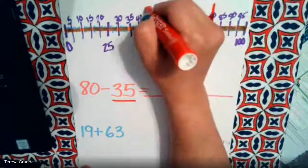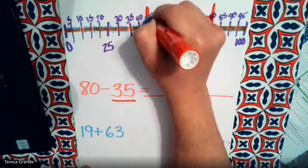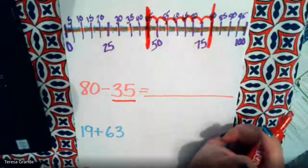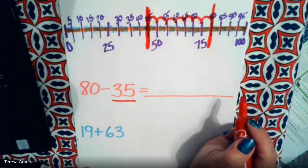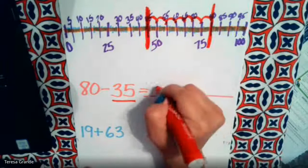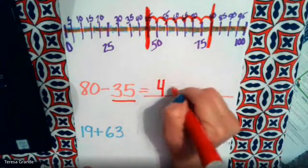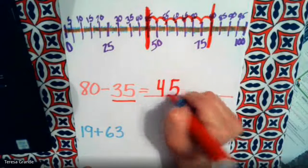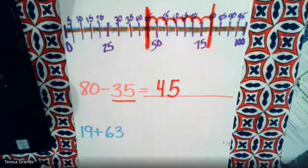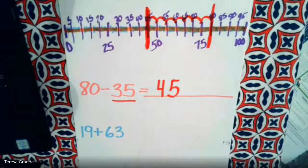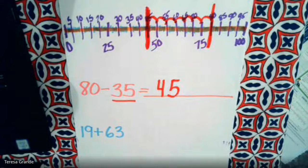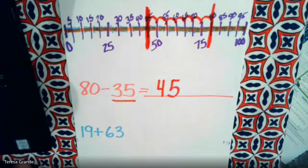What is 80 minus 35? Let's see, what number did I land on? That's right, I landed on the number 45. So 80 minus 35 equals 45.